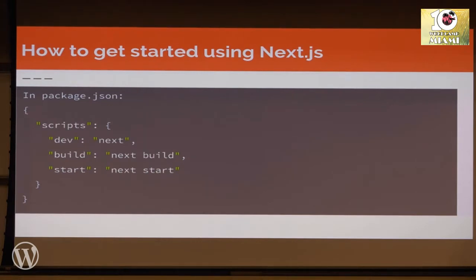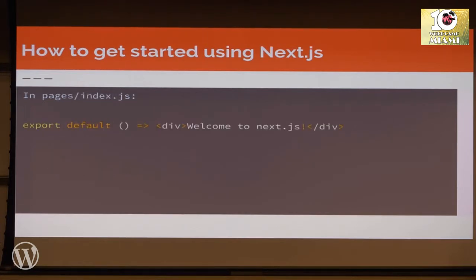Inside your package.json, you want to add in a scripts key. Your dev script just runs the command 'next'. Build runs 'next build'. And start runs the server with 'next start'. To get started, you only need Node.js installed — it works on Windows, Mac, or Linux. Inside your pages directory, this is a very simple page — we're just exporting the default and literally just saying, welcome to Next.js.